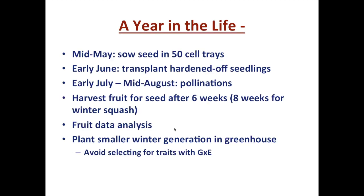Looking at the whole process throughout the season: we recently started sowing seed in 50-cell trays to go to the field. In early June, we will transplant our hardened-off seedlings. Pollinations will start in early July and continue to mid-August, with some shorter-season squash like cucurbita pepo flowering earlier. After each pollination, in addition to writing the male and female parents on the tag, we include the date. This is important to ensure we leave fruit on until the seed are ripe and mature, which is about six weeks — about eight weeks for winter squash.